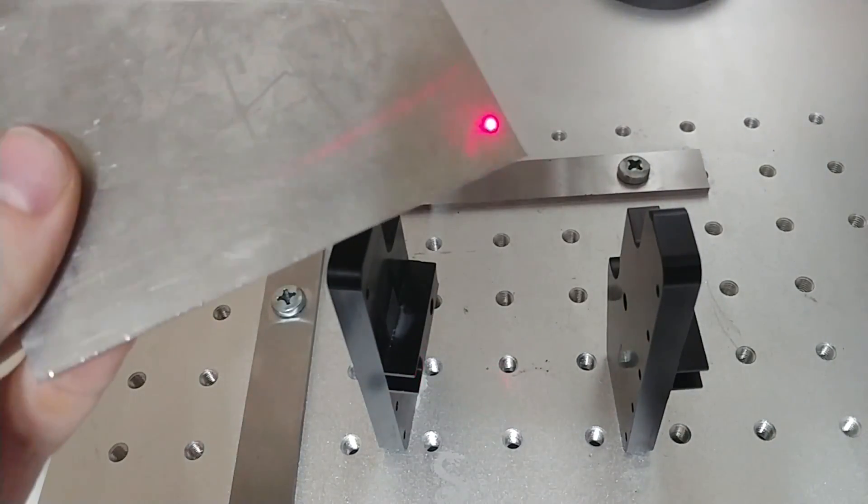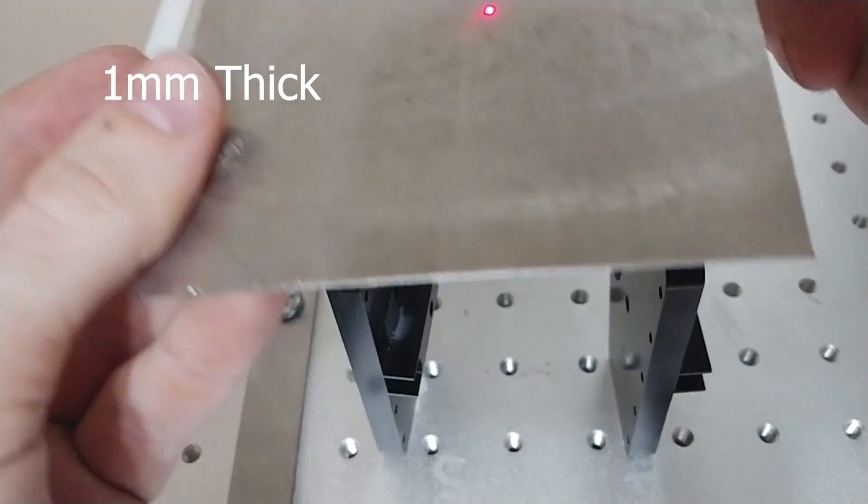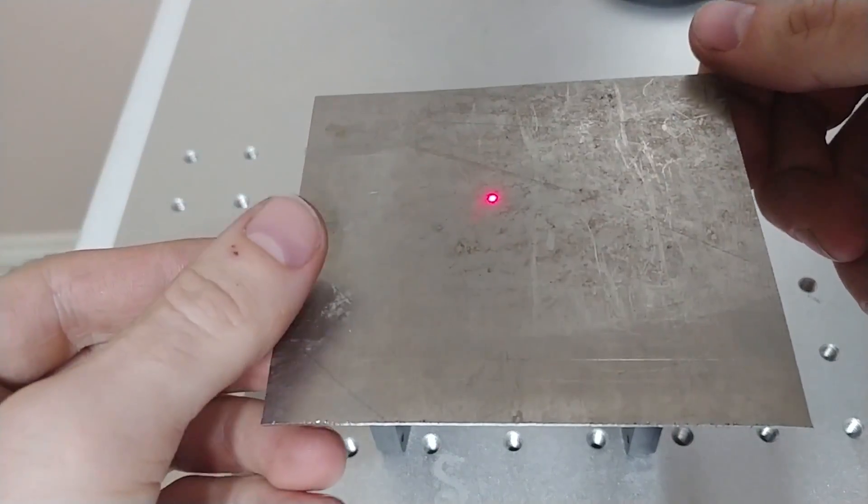I've got a one millimeter thick piece of stainless steel here that I'm going to try to cut through. I'm going to make a circle in EasyCAD and put this on these little stilts that I have.